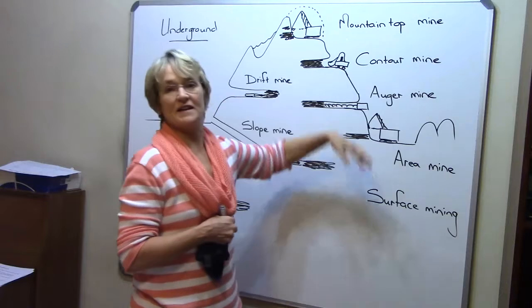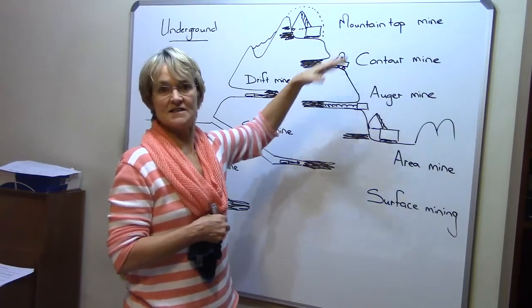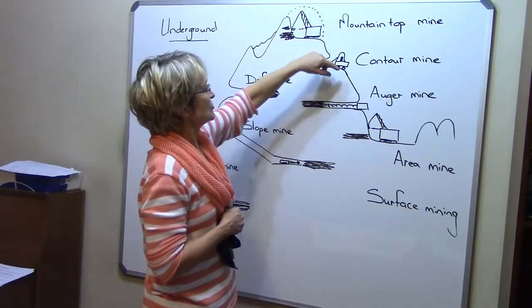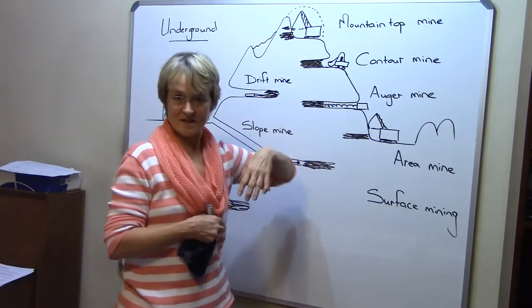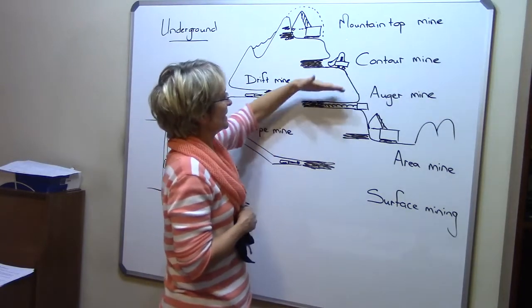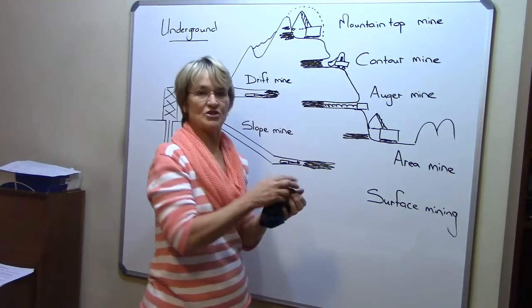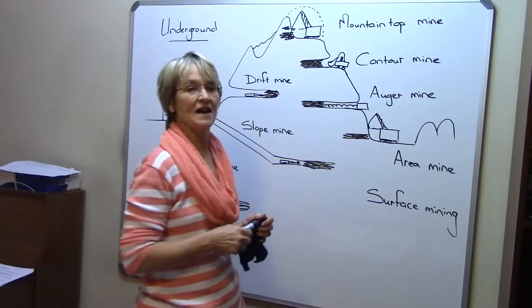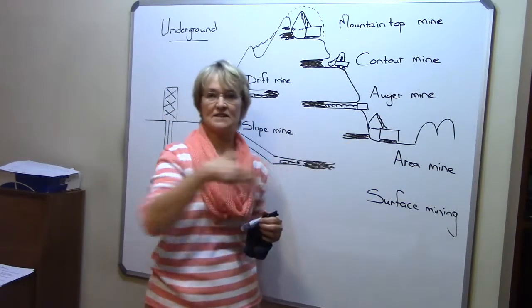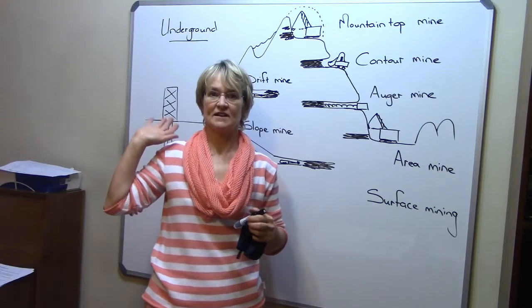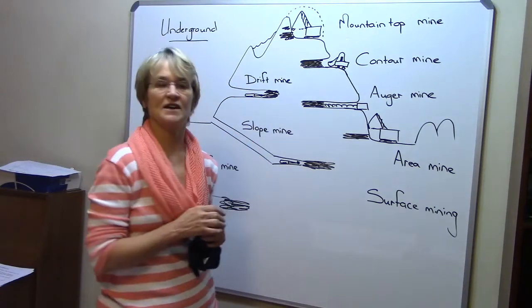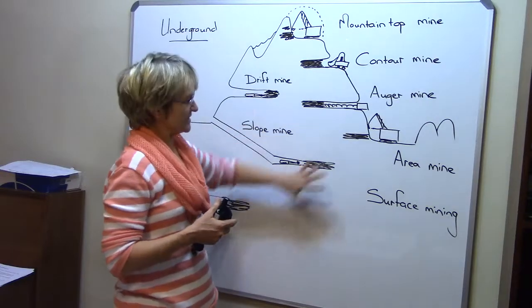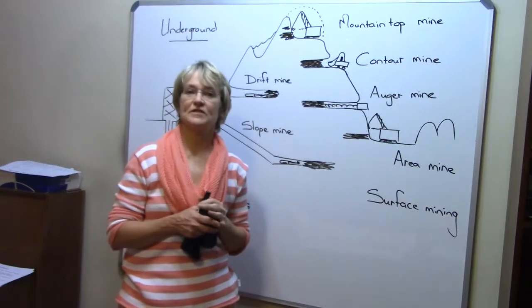Surface mining is closer and easier to remove. You have mountain top mining, contour mining all around on contours, auger mining where it functions like a drawer entering to remove the coal, and area mining which we know well in our area.